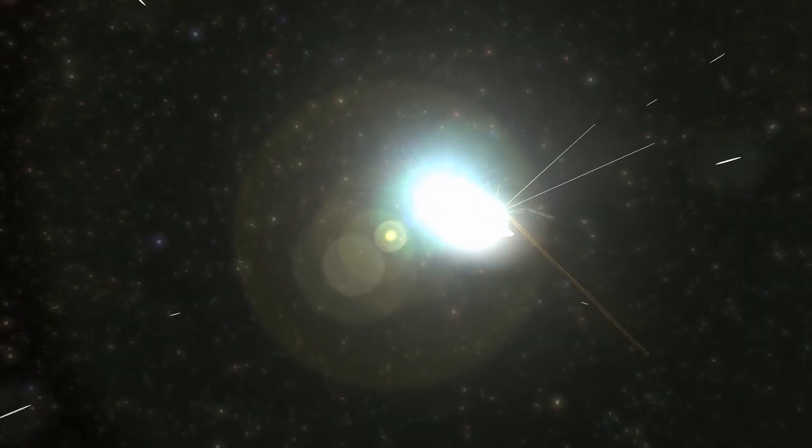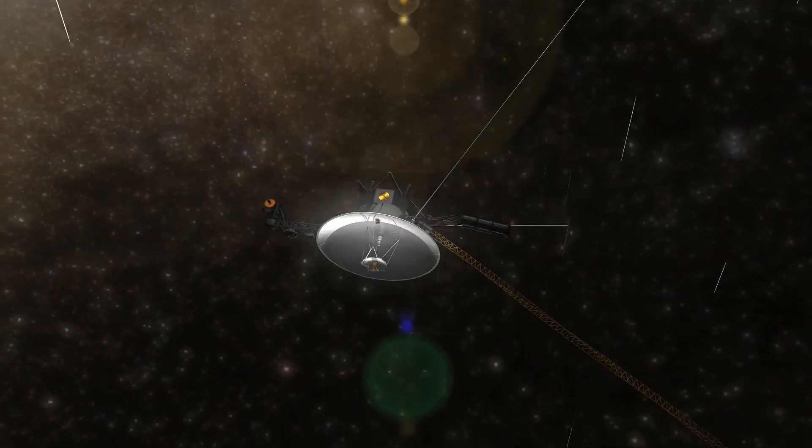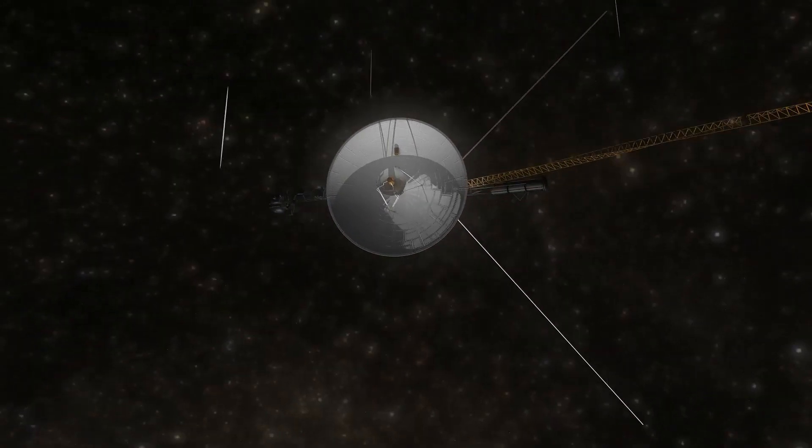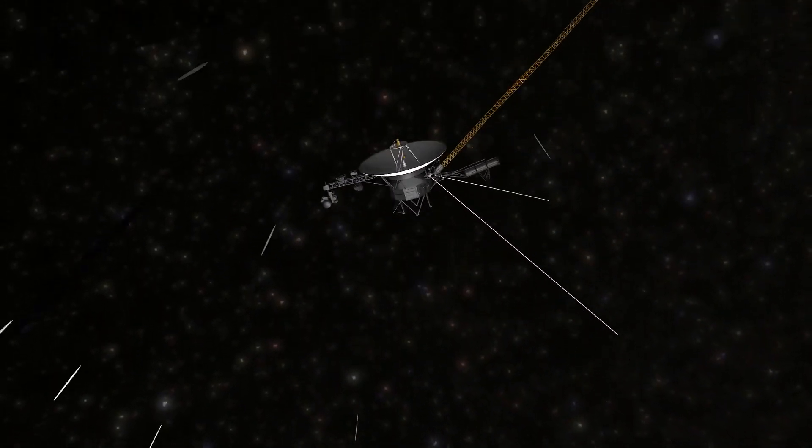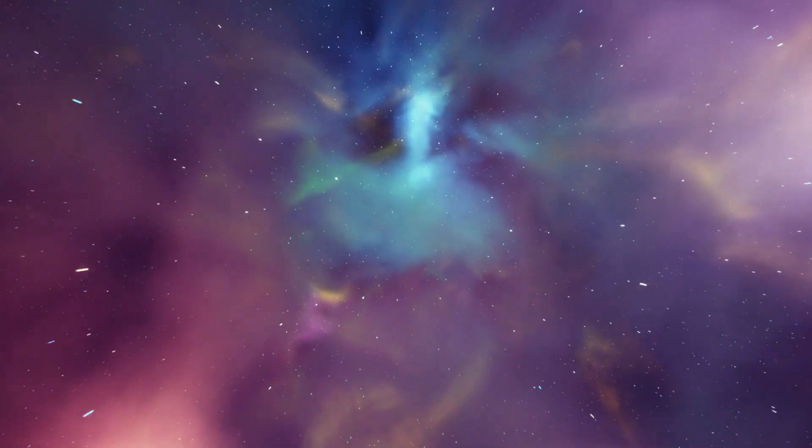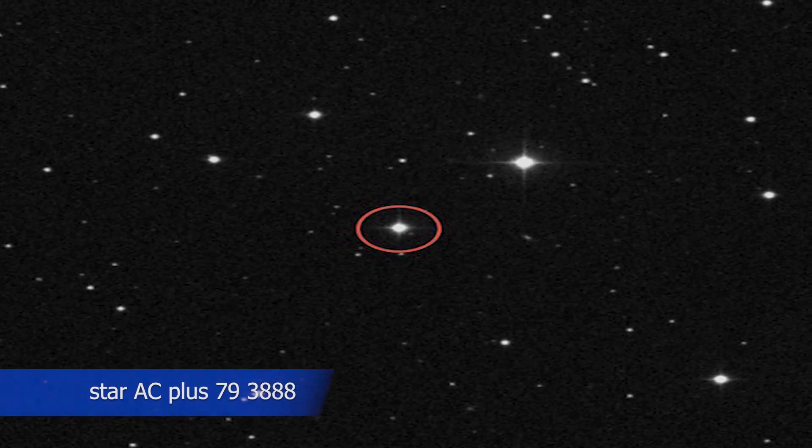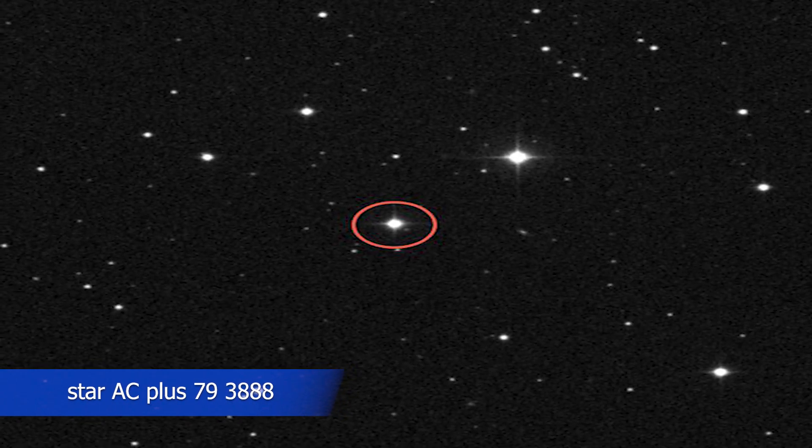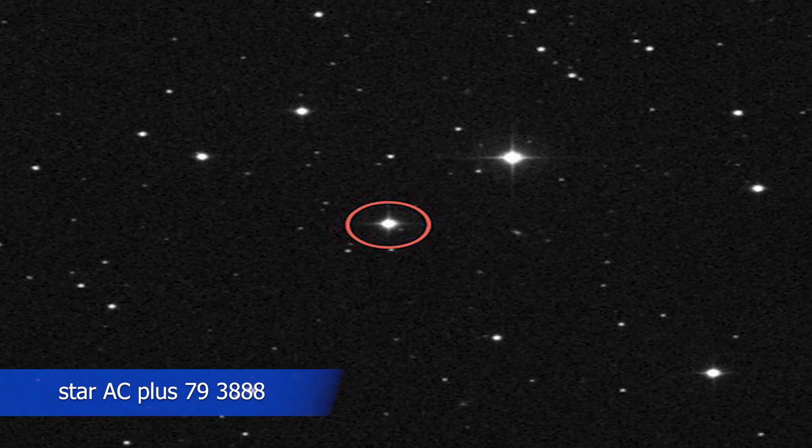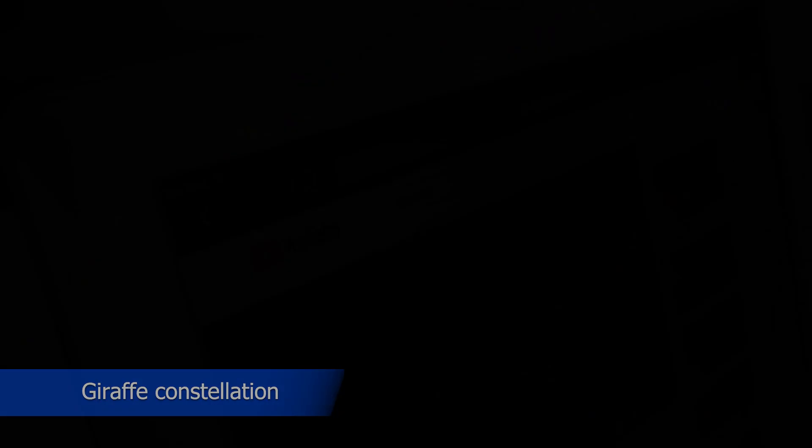Until at least 2025, the Voyagers have adequate fuel and electricity to run their primary scientific instruments. Voyager 1 will be roughly 22.1 billion kilometers away from the sun at that point. And after 1.6 light years, Voyager 1 will arrive to the star AC plus 79,3888 in the giraffe constellation in almost 40,000 years.